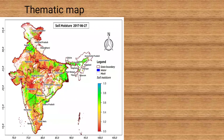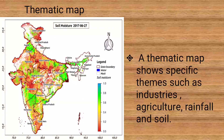A thematic map shows specific themes such as industries, agriculture, rainfall and soil.